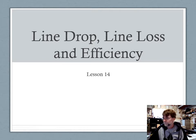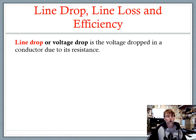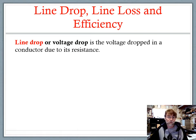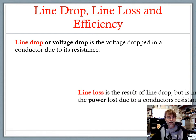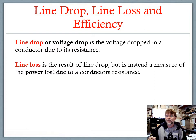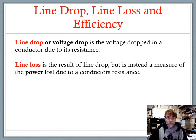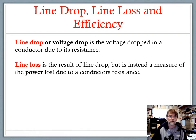Line drop or voltage drop is the voltage dropped in the conductor due to its resistance. We've been using the term voltage drop talking about voltages dropped across resistors and loads. When we talk about the voltage dropped across the resistance of the conductor, we call that line drop. Line drop and line loss are both a result of the same thing — the resistance of the conductor — but line drop is about voltage, while line loss is about power values.